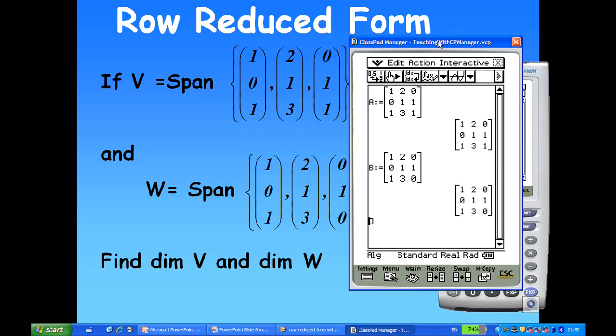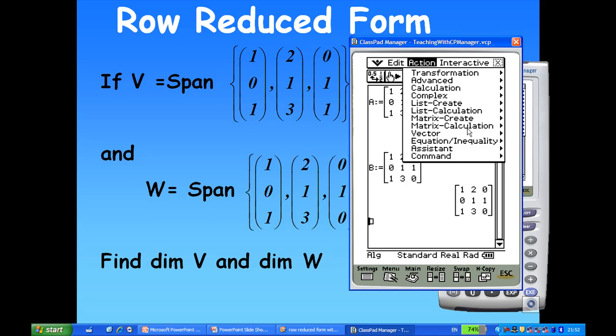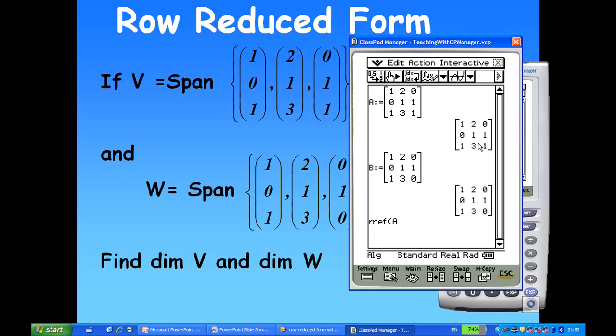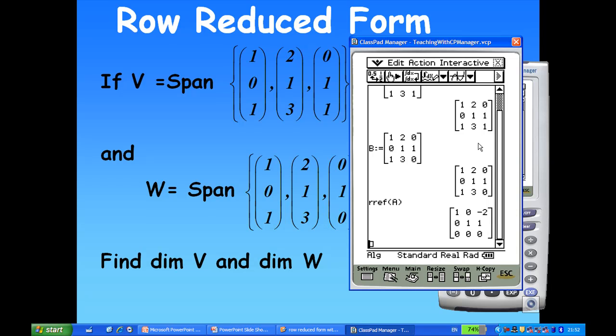So let me close the keyboard. I'm going to do the row reduced form. So I'm going to do action, matrix calculation, RREF A. So this will tell me the relation between the columns of V, v1, v2, v3. Then I find that the third column is actually minus 2 times the first column plus 1 times the second column.